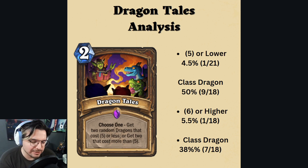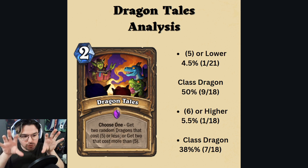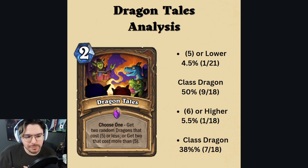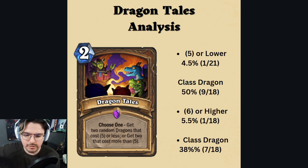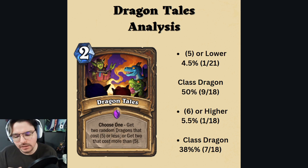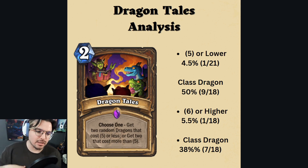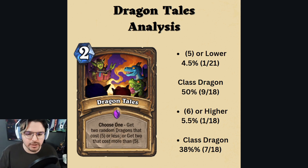You also have to factor in that there are two separate cards you could randomly generate, and for each of those individual cards, that is what the percentage is for getting it. We have the lower bracket of dragons and the class dragons associated with it, and then we also have the six or higher cost dragons as well as class dragons, which we'll get into later.